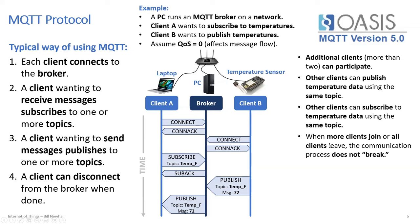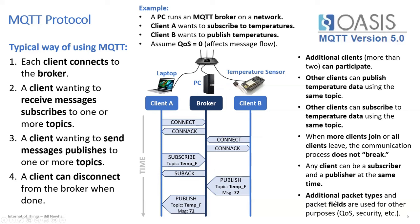When more clients join, you don't have to change anything about the architecture. If a client leaves or is unplugged unexpectedly, the communication process doesn't break — it's automatically handled. Any client can be a subscriber and publisher at the same time. This is the overview of QoS 0, which I'd describe as 'fire and forget' — there's no guarantee the message gets there, but higher qualities of service add additional packet types for greater reliability.